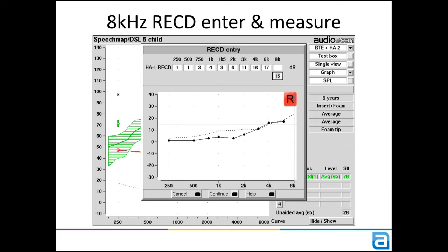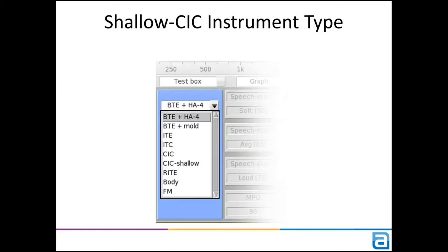We've also added CIC shallow as a new instrument type. When running SpeechMap in the test box, the instrument type determines the RECD type applied to the coupler microphone, and which microphone location effects are applied to the stimulus. When CIC is selected, an additional correction for a deep insertion is also added. Since many CIC instruments do not extend that deep into the ear canal, the CIC shallow instrument type removes that additional correction.